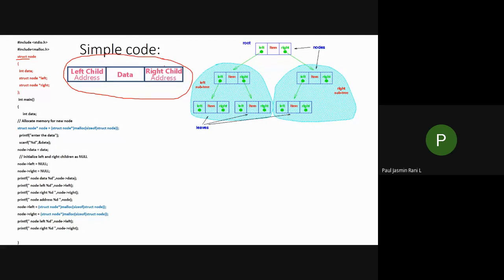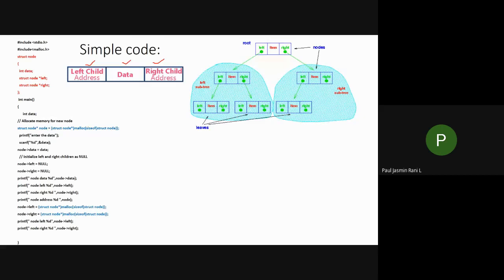In a tree data structure, each node consists of three fields: one data field, one left address field, and one right address field. The data field can be integer, float, string, or character. The left child address and right child address must be pointers, because we are storing addresses. You must include the pointer concept to access these addresses.